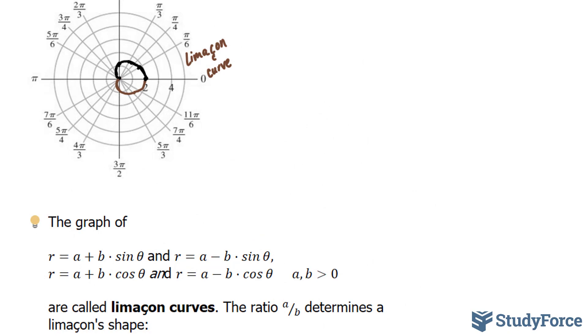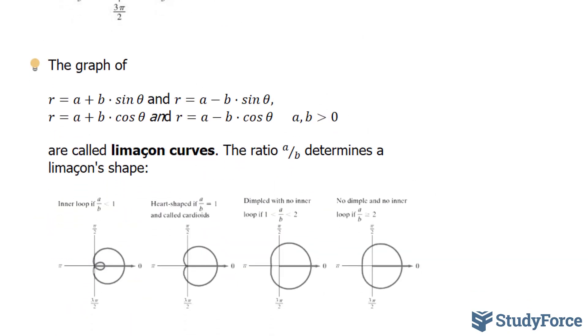That being said, let's analyze this a little further. The graph of r equals a plus b times sine theta, or the difference of the two with sine, and a plus b cosine theta and their difference, will generate these types of curves. The ratio of a over b determines its shape.